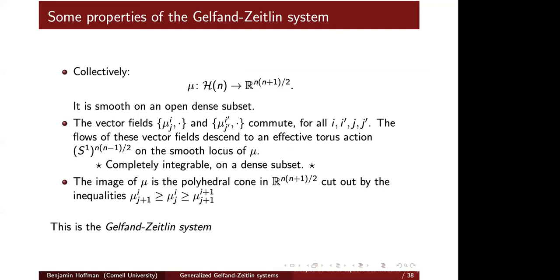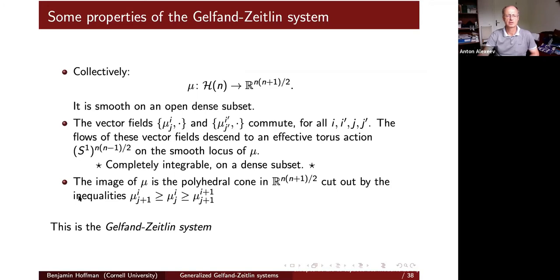If I restrict to a generic symplectic leaf — an orbit through a diagonal matrix with all distinct eigenvalues — this is a symplectic manifold, and the dimension of this torus is half the dimension of that symplectic manifold. This gives a completely integrable system on an open dense subset of that symplectic leaf.